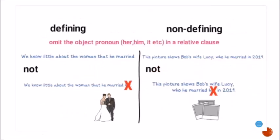In both defining and non-defining relative clauses, we omit the object pronoun — her, him, it, etc. — inside the relative clause. Example: 'We know little about the woman that he married' — NOT 'the woman that he married her.' Similarly: 'This picture shows Bob's wife Lucy, who he married in 2019' — we omit 'her' at the end.